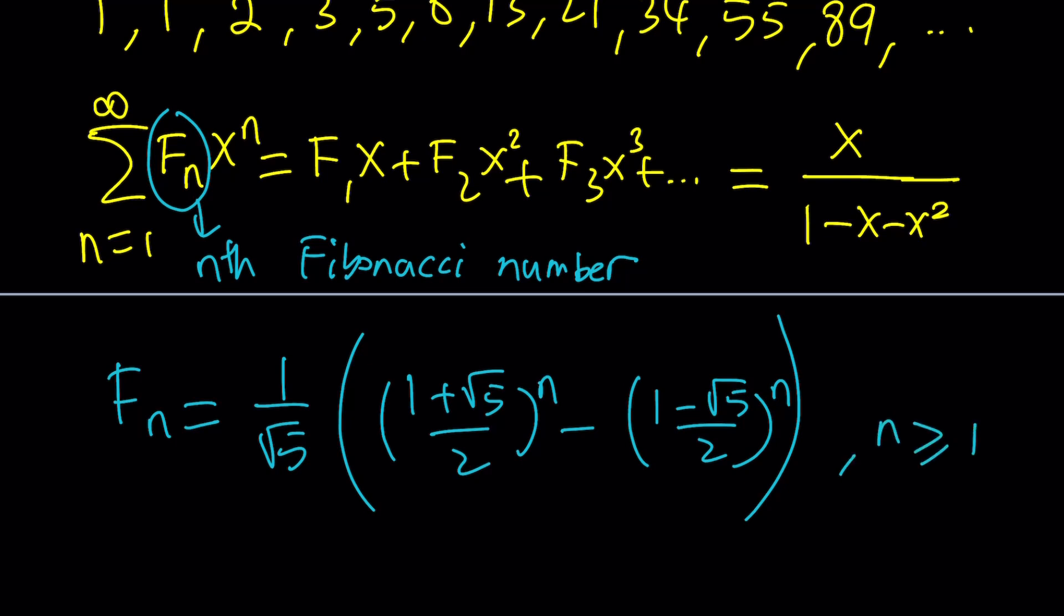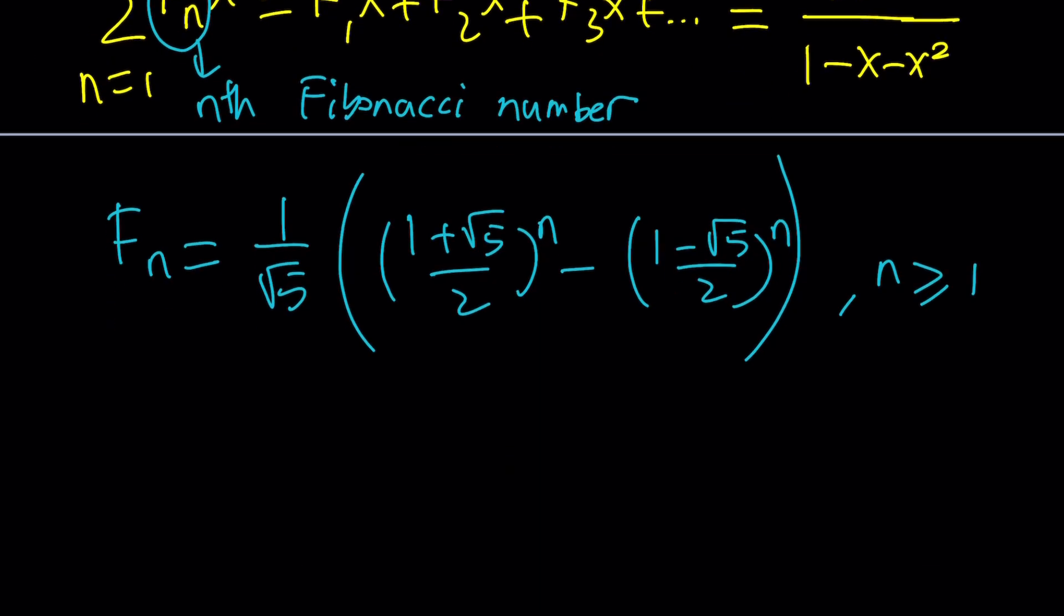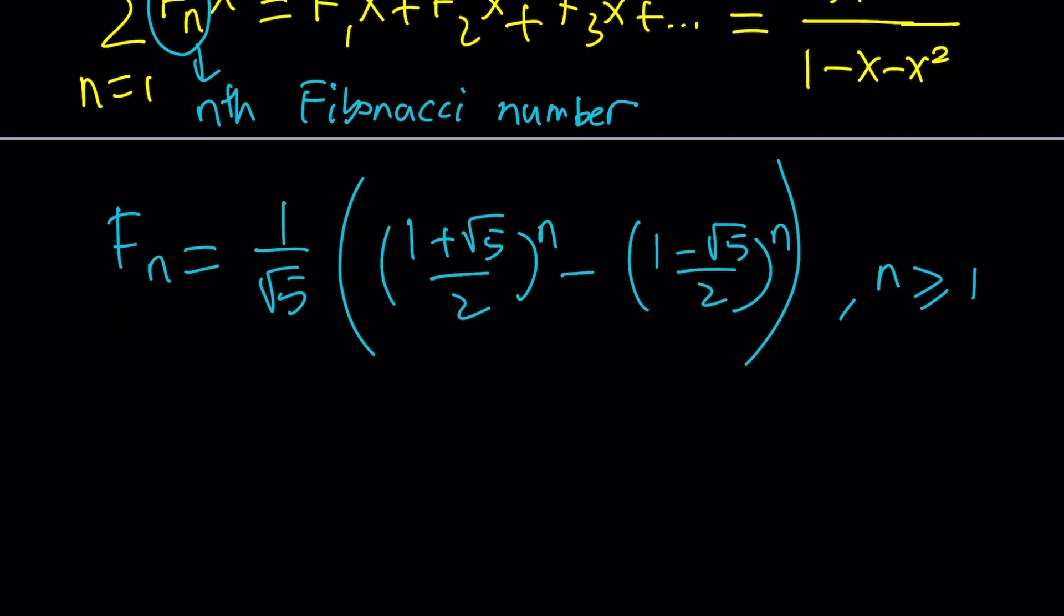So to be able to work this problem, since its coefficients are consecutive Fibonacci numbers, we're going to consider the following polynomial, which has these as its roots: 1 plus root 5 over 2 and 1 minus root 5 over 2. The polynomial is x squared minus x minus 1 equals 0. Notice that we have something similar in the denominator.